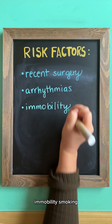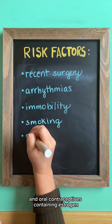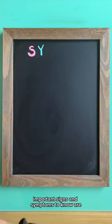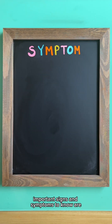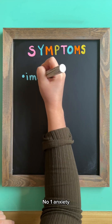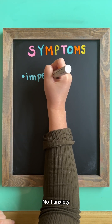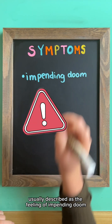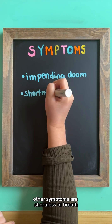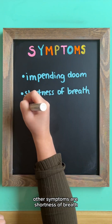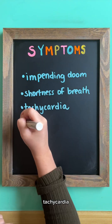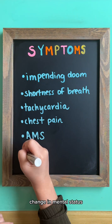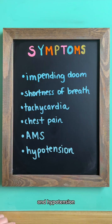Additional risk factors include immobility, smoking, and oral contraceptives containing estrogen and progesterone. Important signs and symptoms to know are: number one, anxiety, which is usually described as the feeling of impending doom. Other symptoms are shortness of breath, tachycardia, chest pain with inspiration, sudden change in mental status, and hypotension.